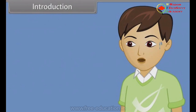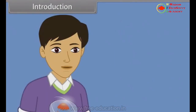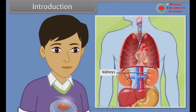Brother, I am sweating so much. Why is it happening? Me too, brother. This happens because of the presence of sweat glands just below the skin. With the help of sweat glands, we excrete water from the body. The major excretory organs of our body are kidneys, lungs, liver, and skin.